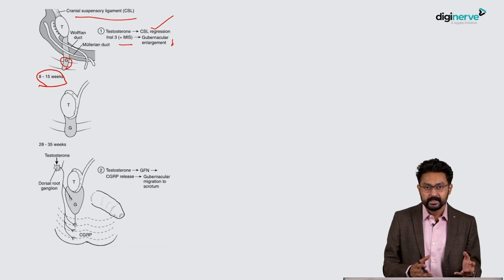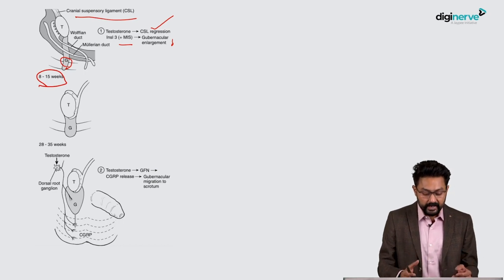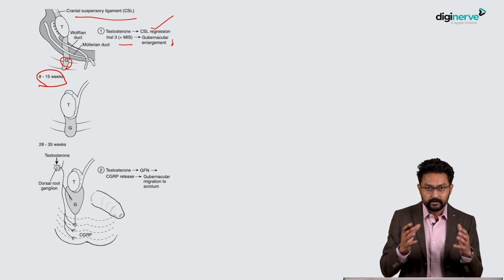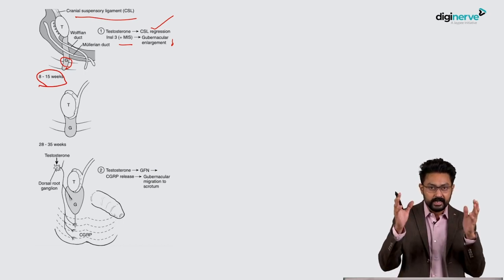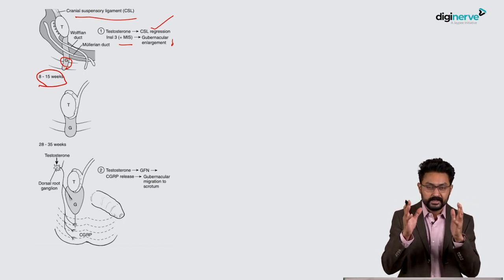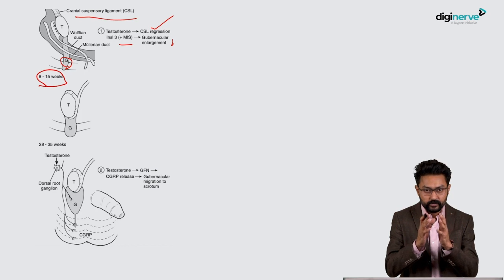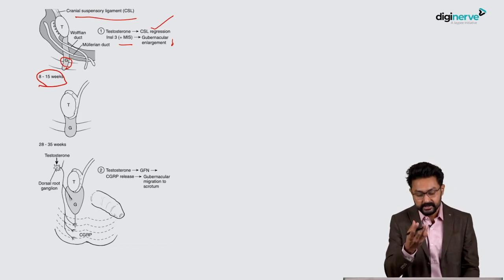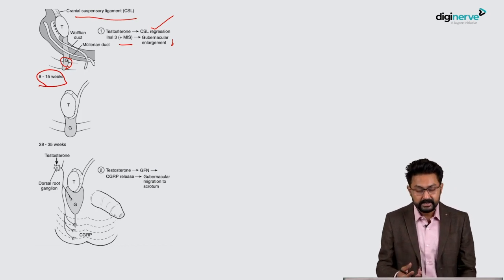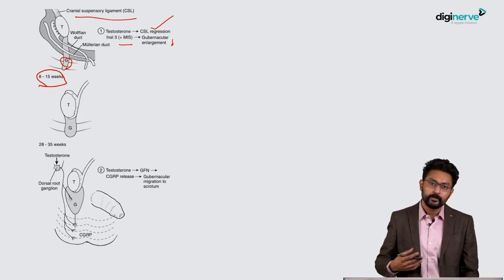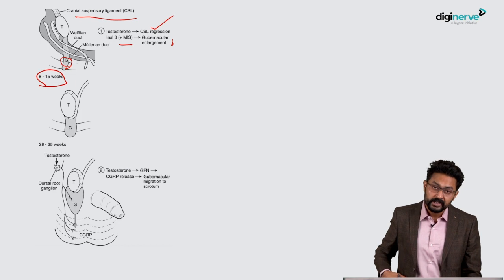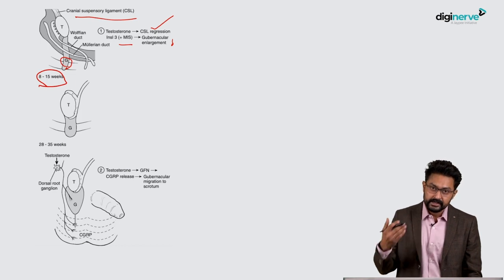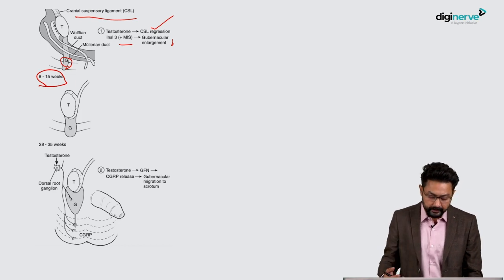It's essentially a mechanical process. With these hormones, the upper cranial suspensory ligament becomes weak and disappears, and the lower gubernaculum enlarges, bringing the testis down from the abdomen up to the deep ring near the groin.